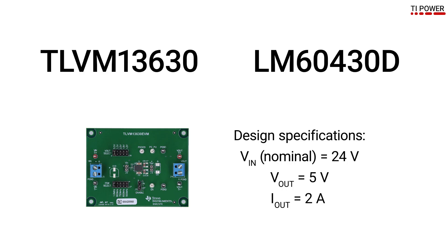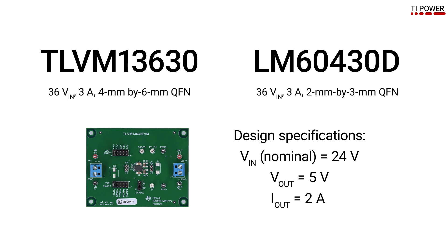Let's take a look at how the same TLVM13630 buck module compares to a parametrically similar converter for a 24V input, 5V output, 10W design. This is a pretty typical requirement for many industrial applications. The LM60430D buck converter was selected for the comparison since it is the smallest package 36V 3A converter in the portfolio, and it switches at a similar frequency of about 1MHz.